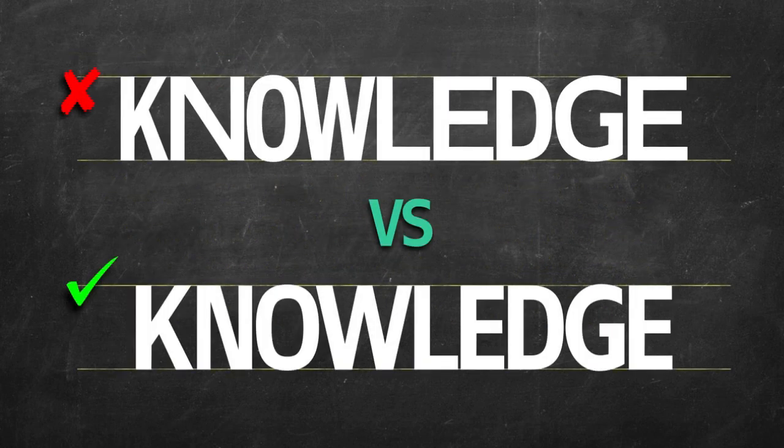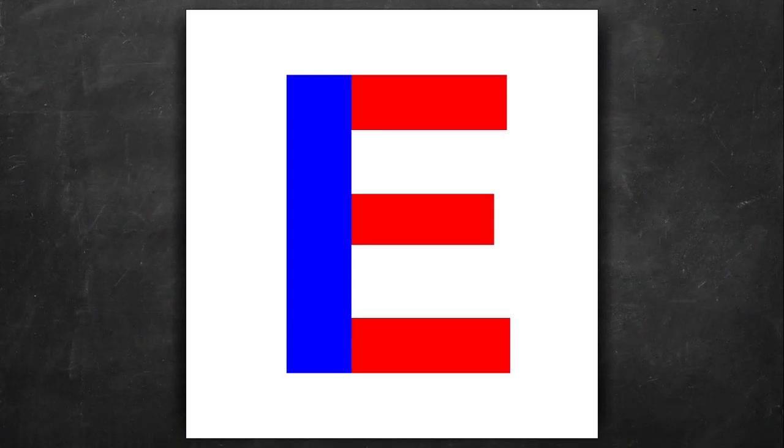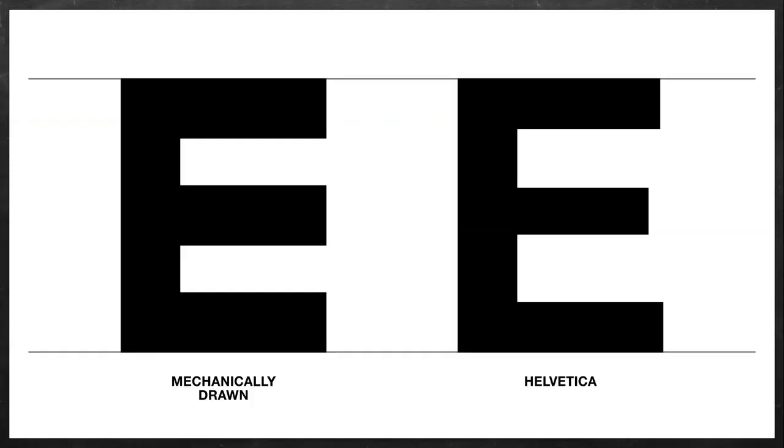Here's an example. Three horizontal strokes. A simple enough concept, but when we look at this mechanically drawn E to the left compared with the Helvetica E on the right, it's pretty easy to see the difference between a letter that's been drawn mechanically with no understanding of nuance and the more refined Helvetica on the right.